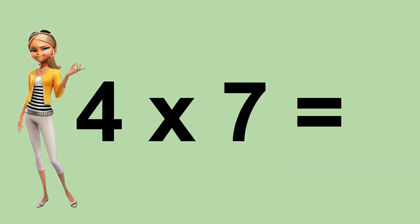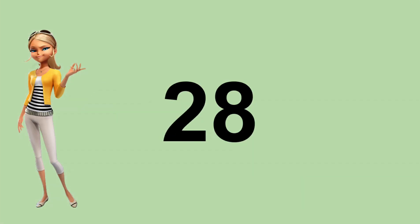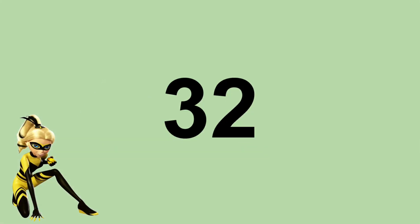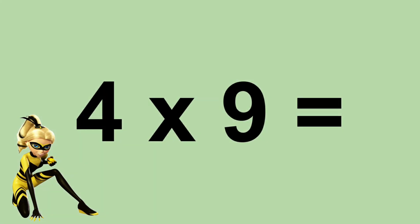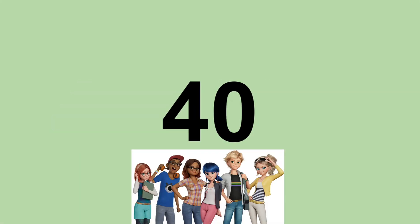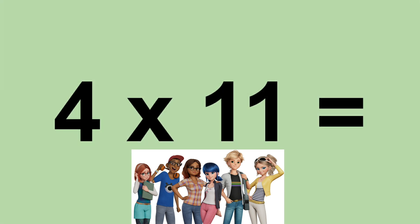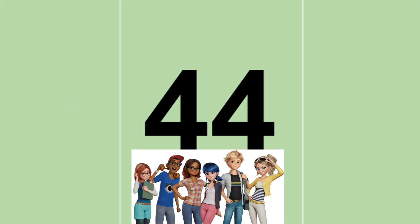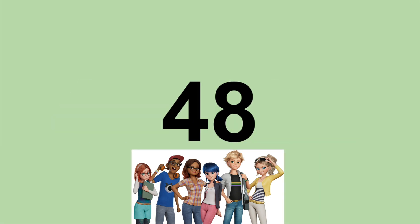Four times seven equals twenty-eight. Four times eight equals thirty-two. Four times nine equals thirty-six. Four times ten equals forty. Four times eleven equals forty-four. Four times twelve equals forty-eight.